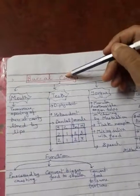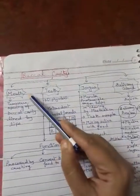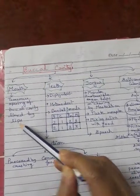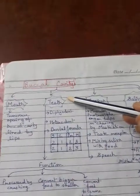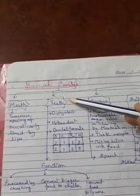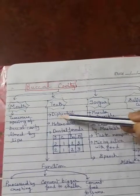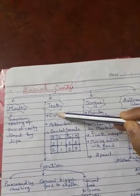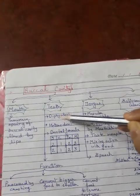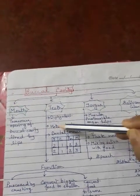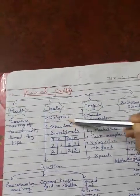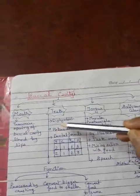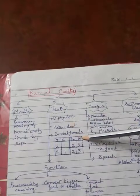The buccal cavity consists of the mouth, which has a transverse opening or lips, and teeth. The presence of teeth in human beings is described by the term diphyodont, meaning we have two types of teeth: milk teeth and permanent teeth. We are also heterodont, meaning we have four kinds of functional teeth: incisors, canines, premolars, and molars.